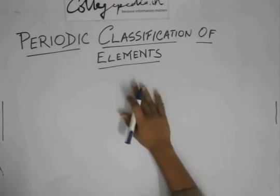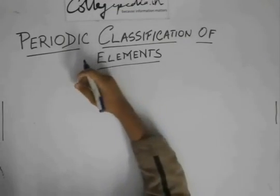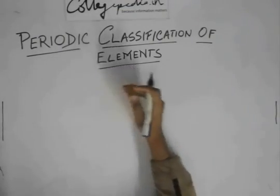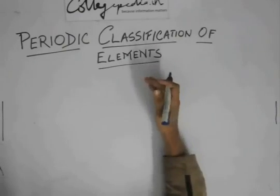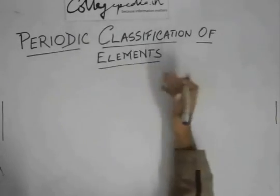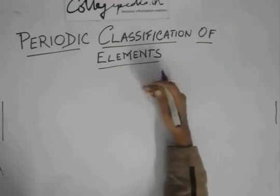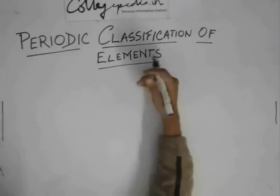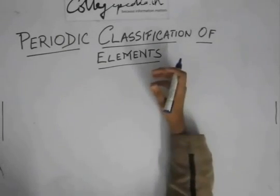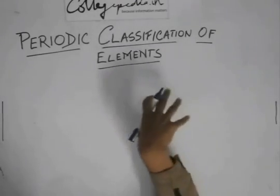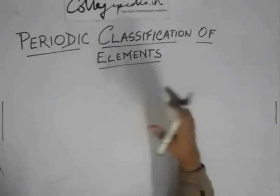So today we will start with periodic classification of elements. Now in the olden times when elements were not discovered, there was no chance of periodic classification, but as more and more elements began to be discovered, there were so many elements that studying all of them separately was not possible and they got mixed up in properties and stuff.